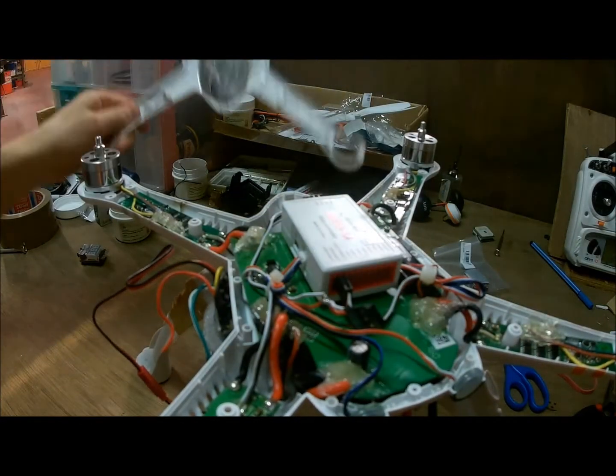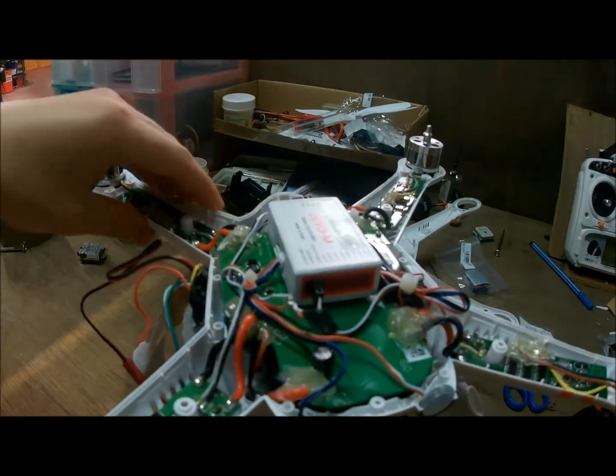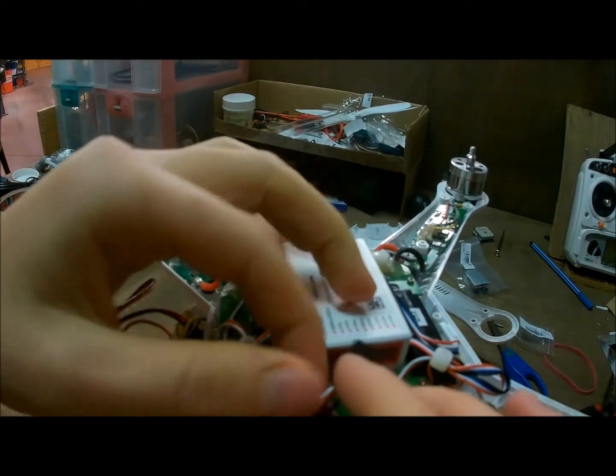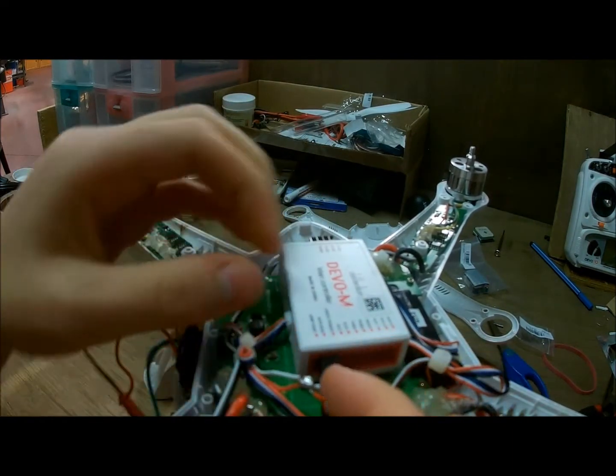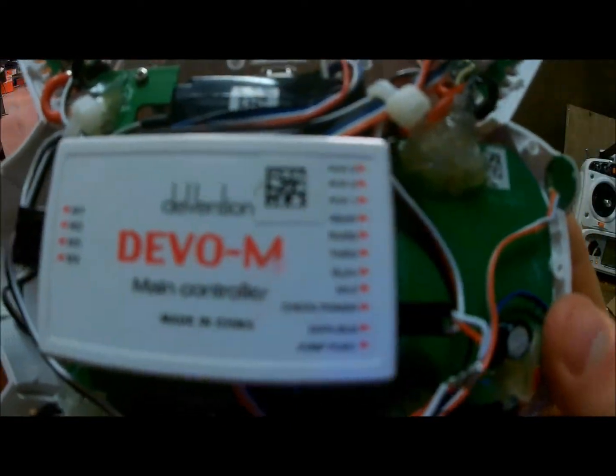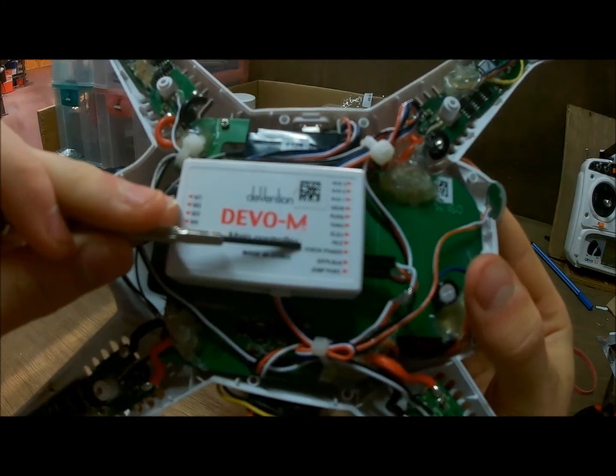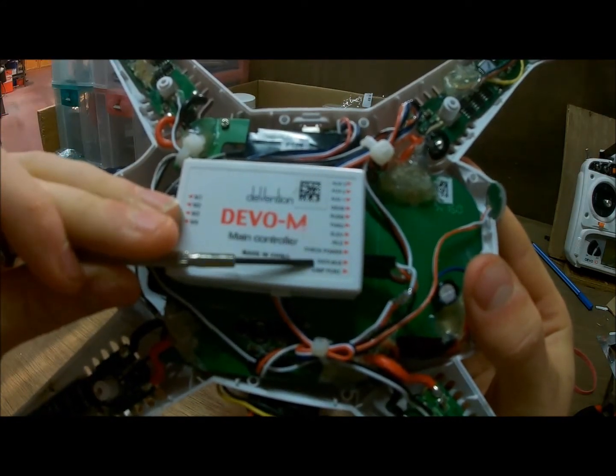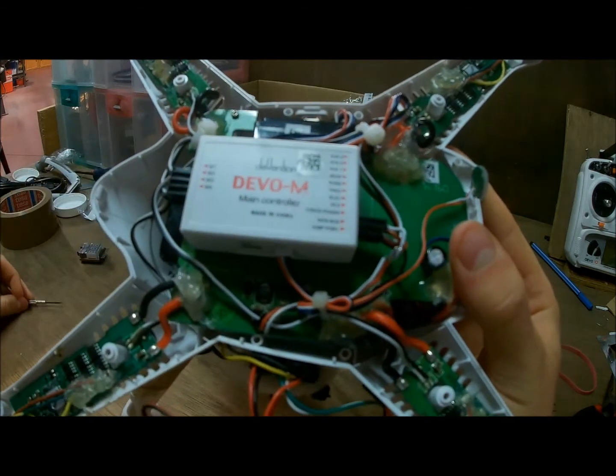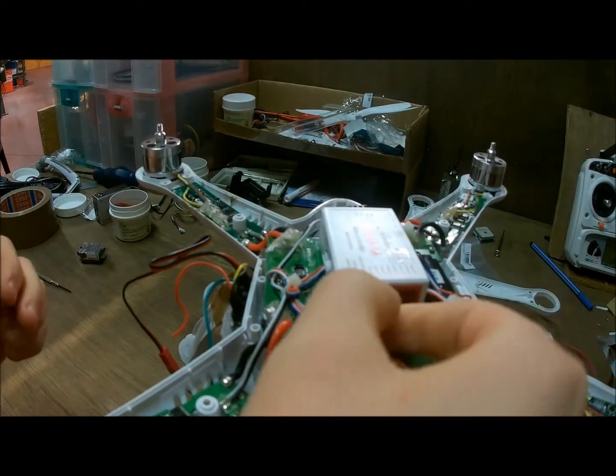When you open up your drone you will see that you have two wires in here in the DVO-M. One of them is right here - check power. And one is data bus. Check power is actually the wire you have to take, check power out.